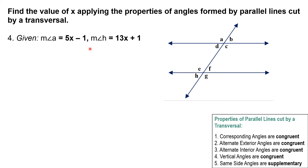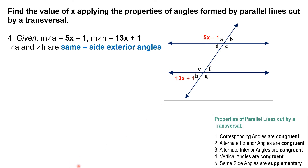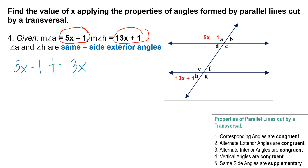For the fourth example, angle A equals 5x minus 1 and angle H equals 13x plus 1. In the figure, angle A and angle H are same-side exterior angles — both on the exterior and on the same side — so they are supplementary. We add them and set the sum equal to 180: 5x minus 1 plus 13x plus 1 equals 180.